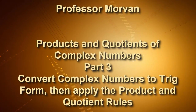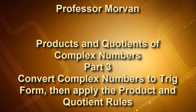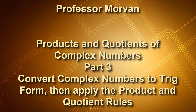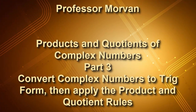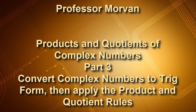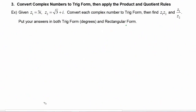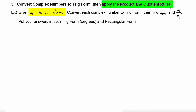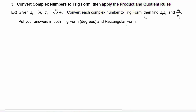In part three of our lesson on products and quotients of complex numbers, you will learn how to convert complex numbers to trig form and then apply the product and quotient rules. In this example we are given two complex numbers in rectangular form: z1 is 3i and z2 is radical 3 plus i. In order to apply the product and quotient rules we must first convert each number to trig form, so let's take them one at a time.